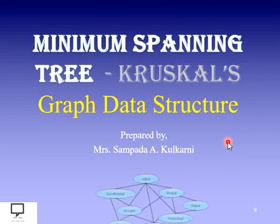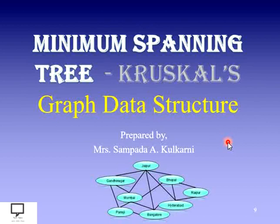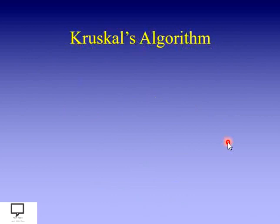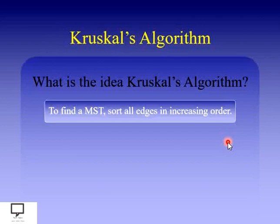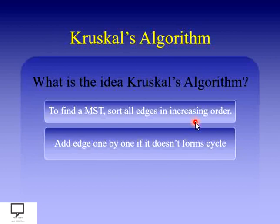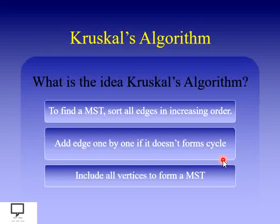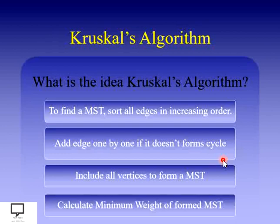Let's start with Kruskal's algorithm for finding the minimum spanning tree in a graph data structure. The idea behind Kruskal's algorithm: first, sort all the edges in increasing order. After sorting, pick each edge one by one and check simultaneously whether it forms any cycle. If it doesn't form a cycle, add that edge to the minimum spanning tree. At the end, calculate the total weight, which will be the minimum.